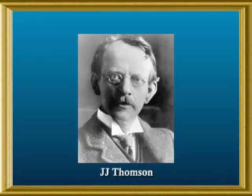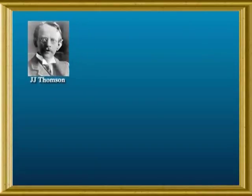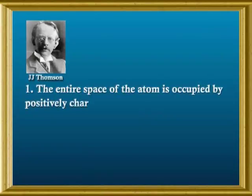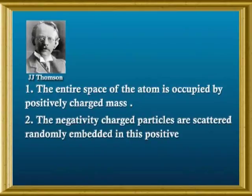Now the question is, where are these particles located in an atom? The first atomic model was proposed by J.J. Thompson. He said that the entire space of the atom is occupied by a positively charged mass, and the negatively charged particles are scattered randomly, embedded in this positively charged mass. If you sketch his postulates, they show close resemblance with the structure of a watermelon. Let's look at this visual and compare.